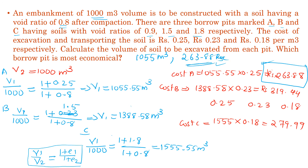The volume of soil required from borrow pit A is 1055 m³ and the cost is Rs. 263.88. You have to remember the equation V1 by V2 is equal to 1 plus E1 by 1 plus E2 to solve this kind of problem. We will discuss more problems in the coming session. Thank you.